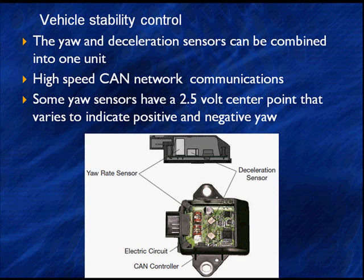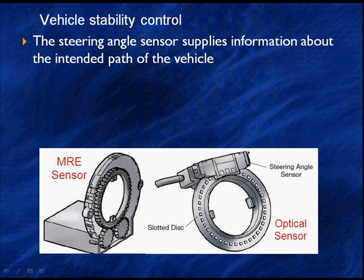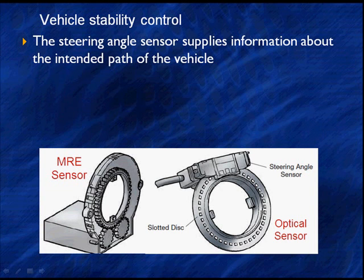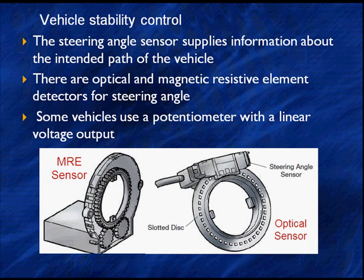The yaw sensors have a 2.5-volt center point that varies to indicate positive and negative yaw — left and right turns. To make the stability control system work, we also need a steering angle sensor that supplies information about the vehicle's intended direction. Types include optical sensors that read lights, MRE (magnetic resistive element) sensors, and linear outputs from a potentiometer. This is necessary to identify the direction of the intended path of the vehicle.